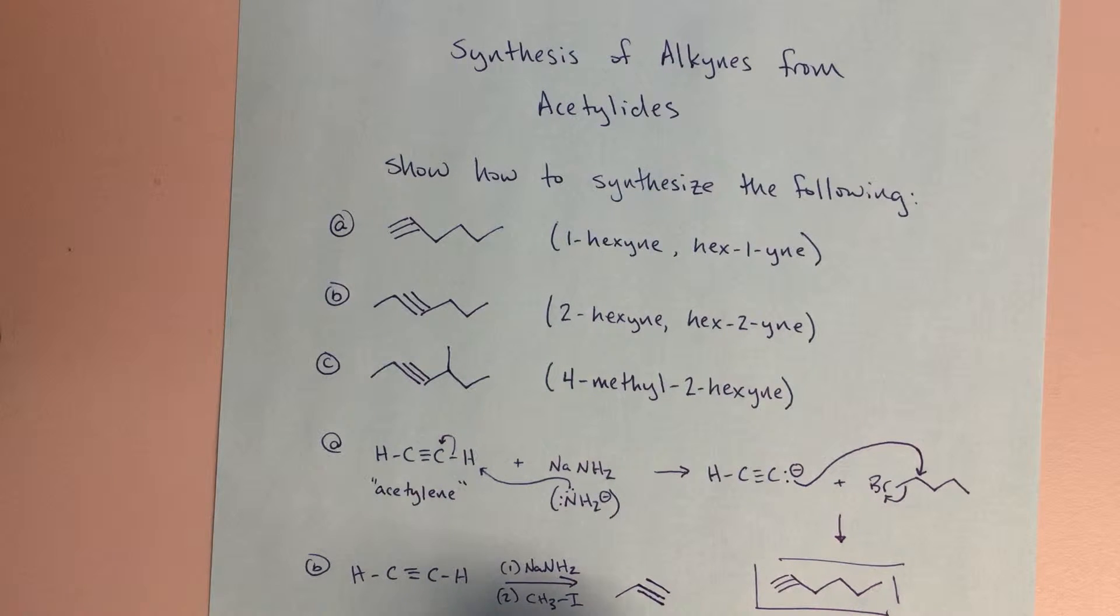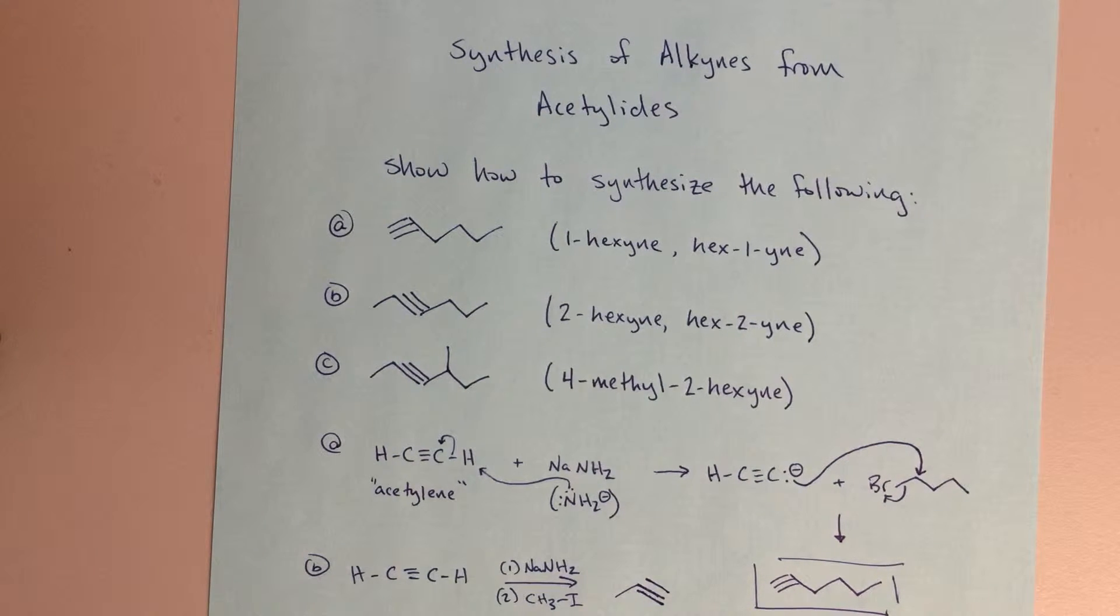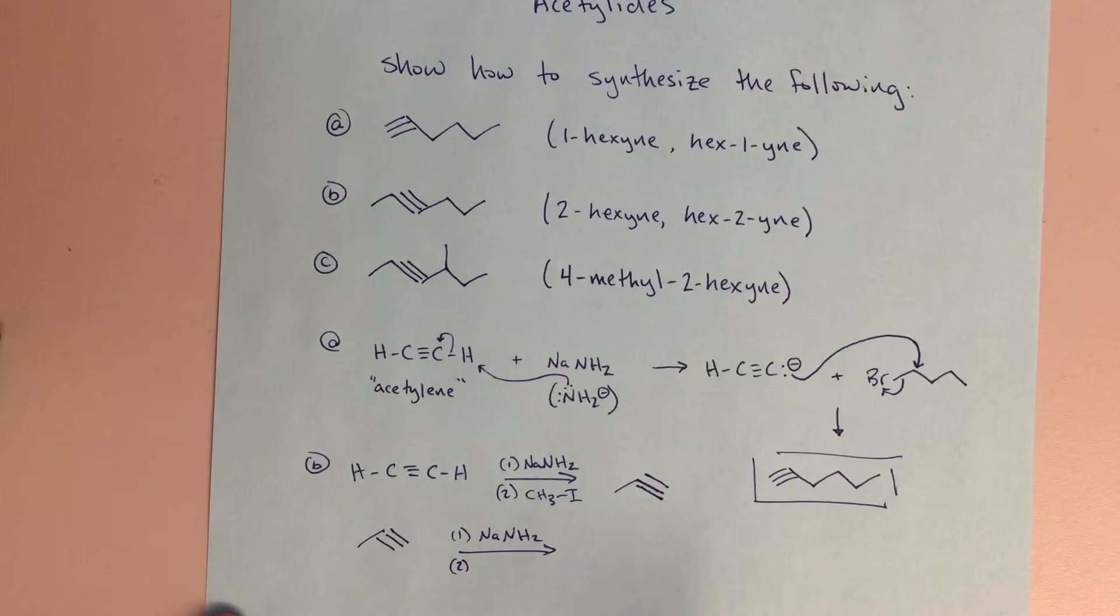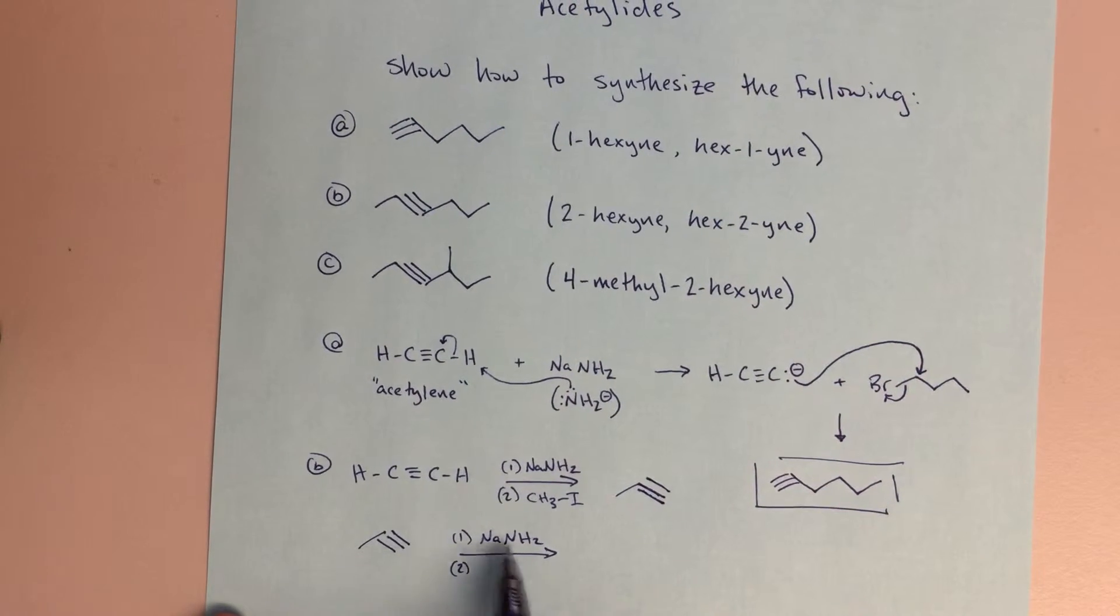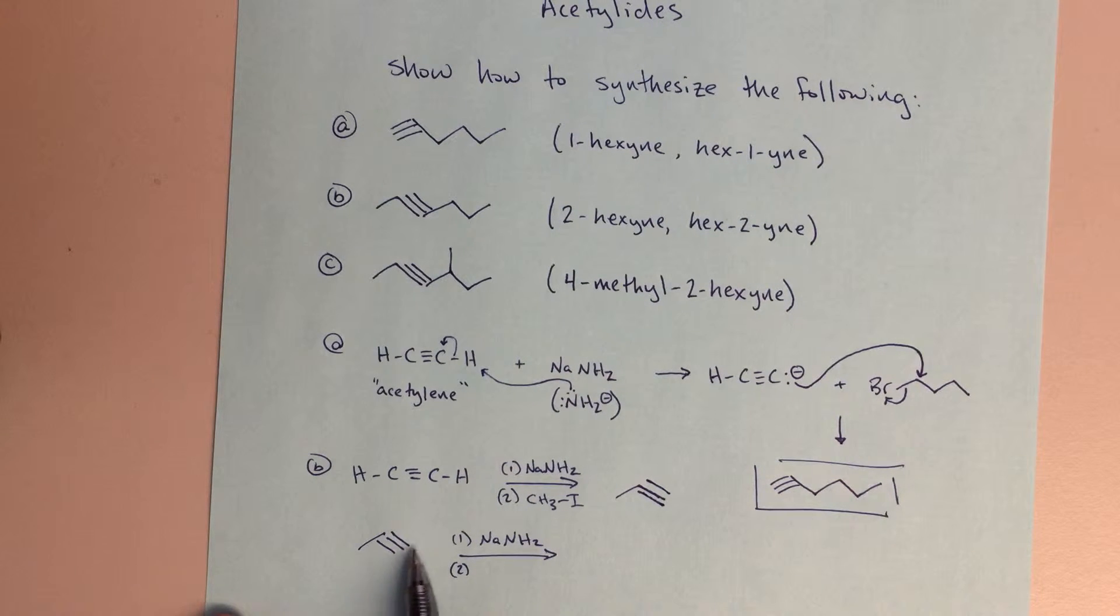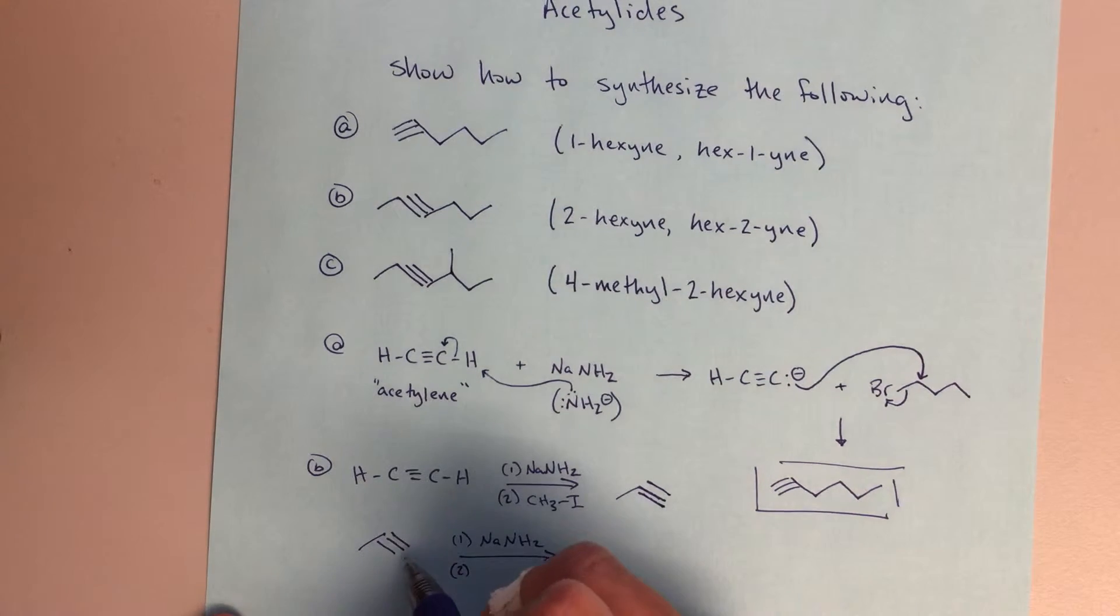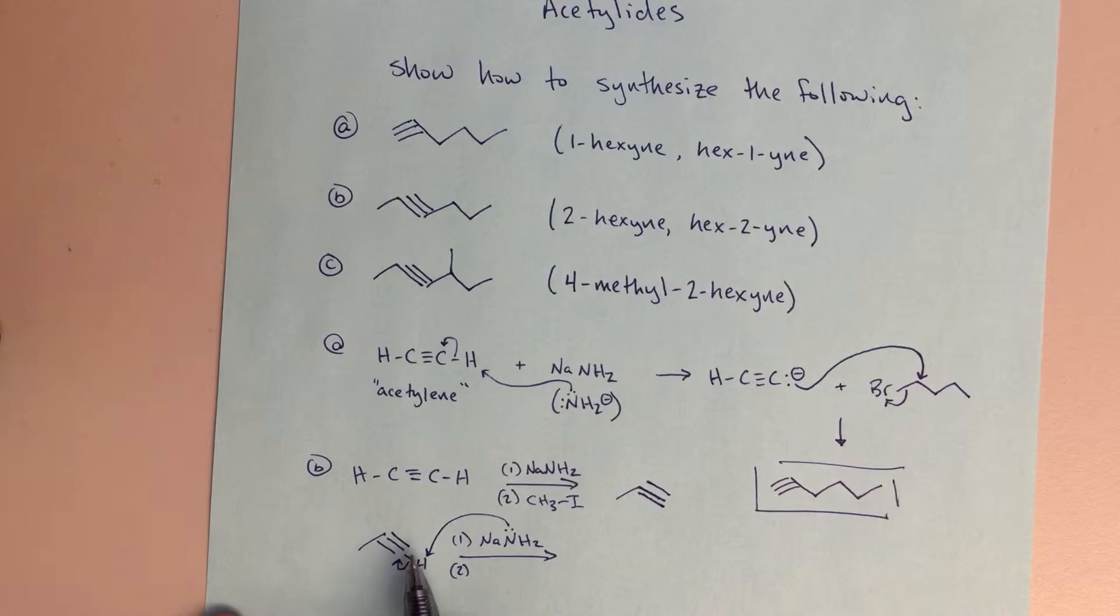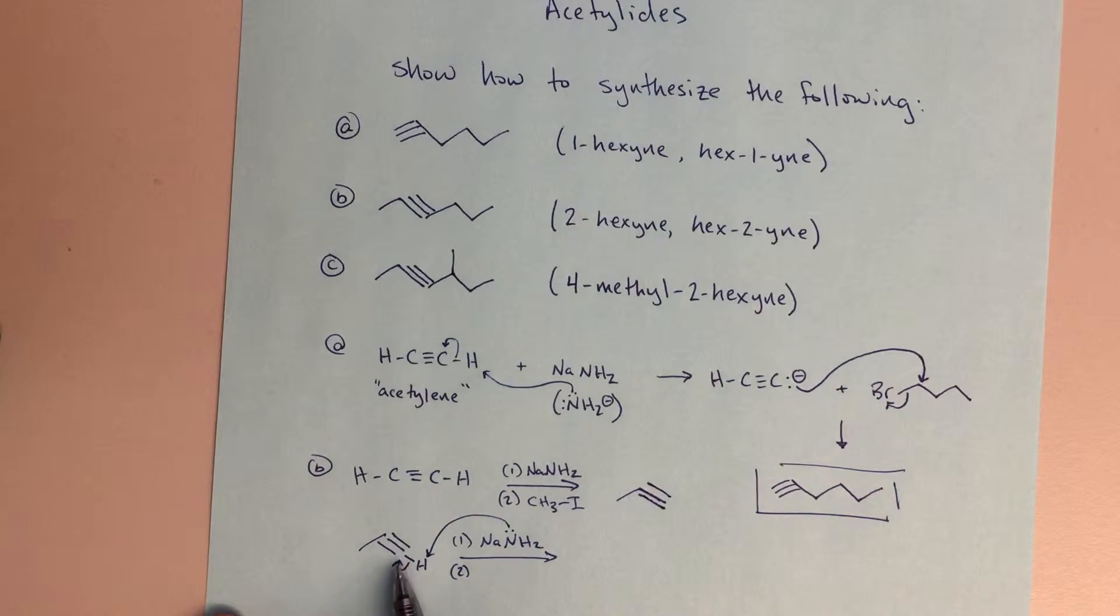In step two, I can again do that sodium amide, and that's going to deprotonate the proton here at the end. In step two, I'm going to take my alkyne that's grown a little bit and do that sodium amide reaction again. That's going to deprotonate the proton here. If I was drawing this out, we would have a hydrogen here. This sodium amide would be deprotonating it. I'm going to end up with that carbanion. That carbanion then can react with another alkyl halide.